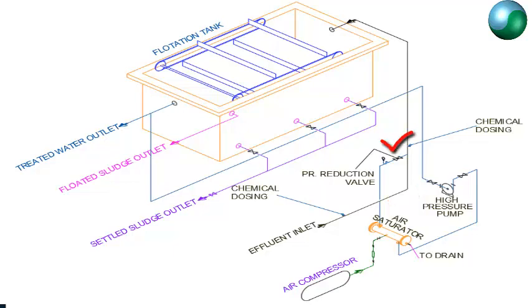Pressure reduction valve is placed just at the inlet of flotation tank to reduce the pressure generated in the air saturator. When the pressure is released, tiny air bubbles stick to the suspended particles and bring them to the surface of water in the flotation tank.